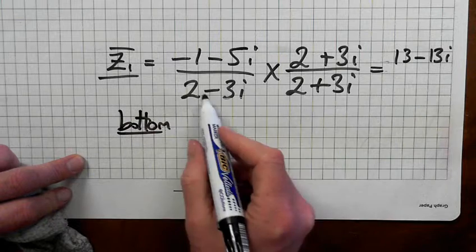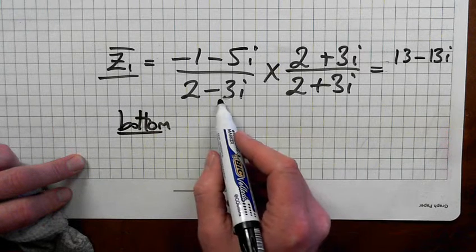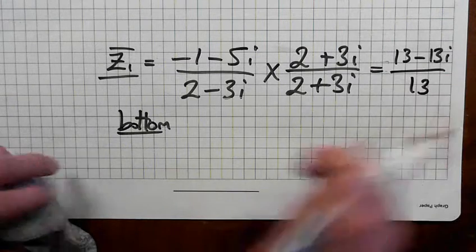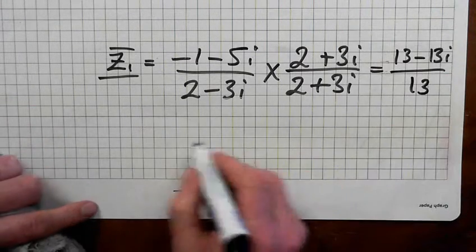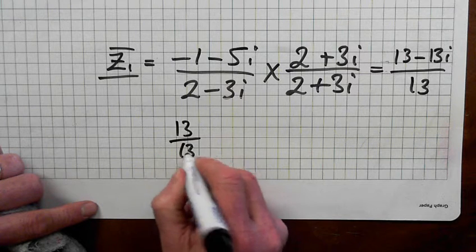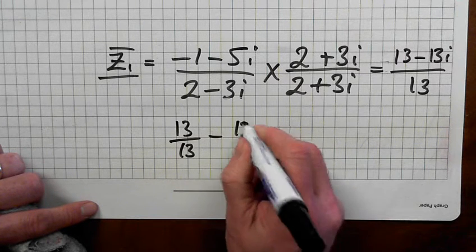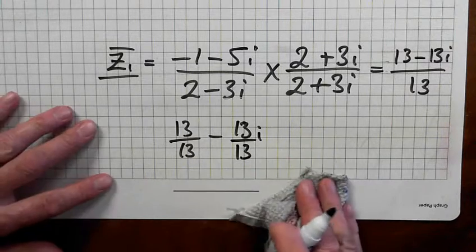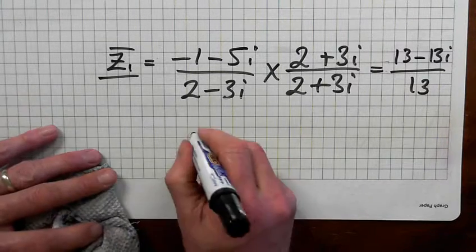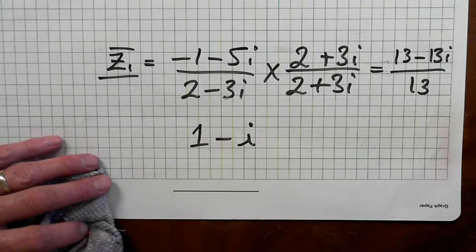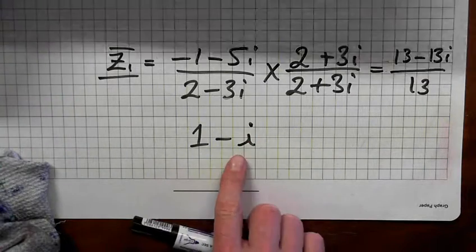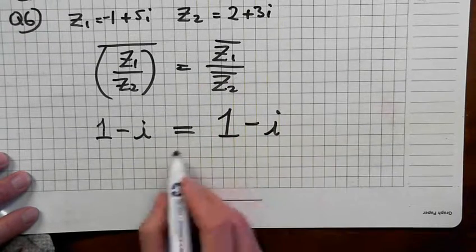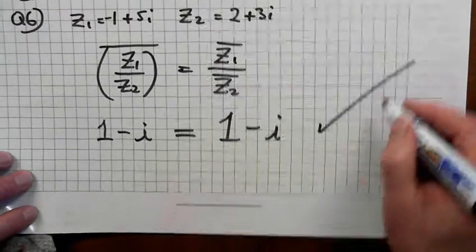We did the bottom already, didn't we? The answer was 13. We did that in the previous bit. Therefore it's 13 over 13 minus 13 over 13i. So that's 1, ends up as 1 minus i. So that's the answer for the second bit: 1 minus i. Are both sides the same? Yes.